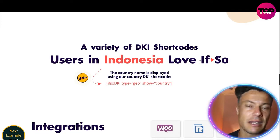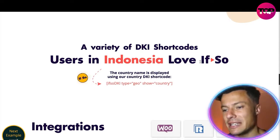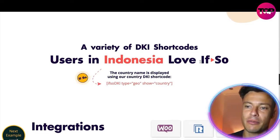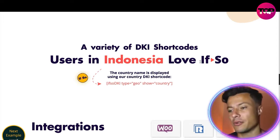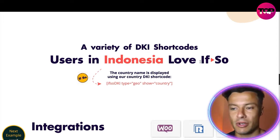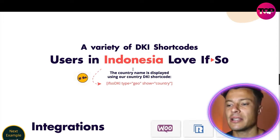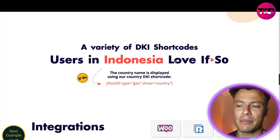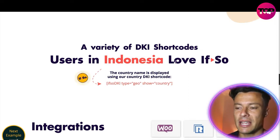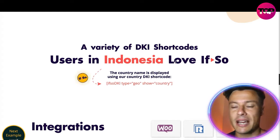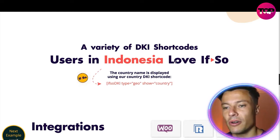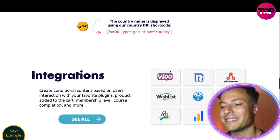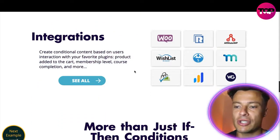I'm currently logging in from Bali, Indonesia, so that's why it's popping up and saying Indonesia. But for example, this might be something you're running on your website where someone's logging in from Japan, Australia, or Canada. When you're logging in from the USA and it pops up saying 'users in Canada love this,' you're not going to be that interested because you're not in Canada — that's the point.